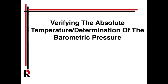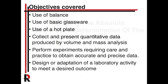This is a lab verifying the absolute temperature and determination of the barometric pressure from the general chemistry lab manual. The objectives covered in this lab include using a balance, basic glassware - flasks and things - and a hot plate. This is a very quantitative lab; you'll hopefully get numbers to crunch and analyze, but it's an experiment that needs a lot of careful handling.